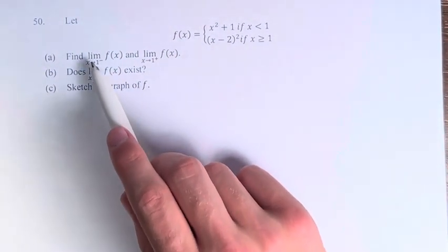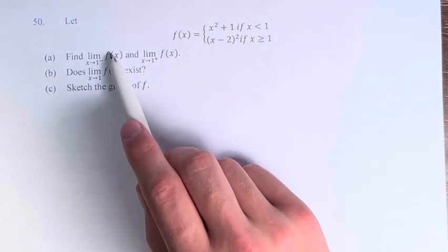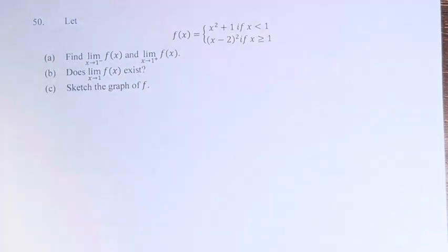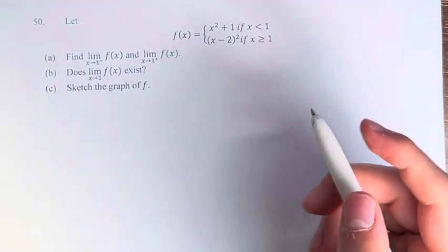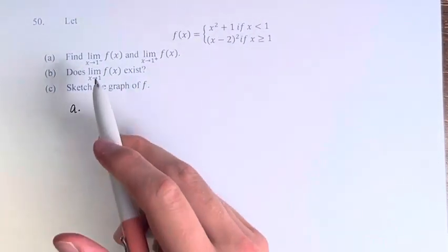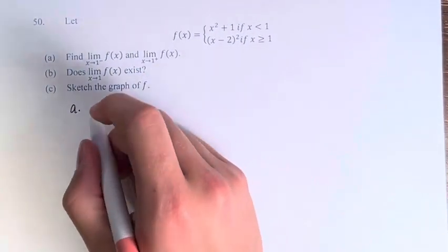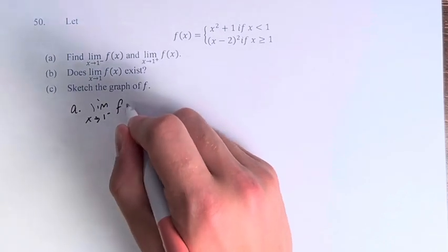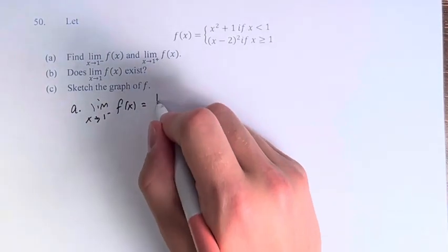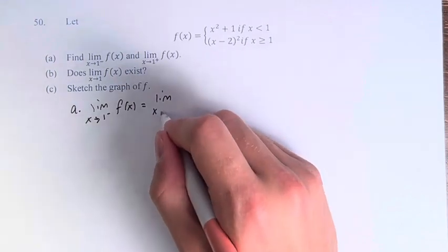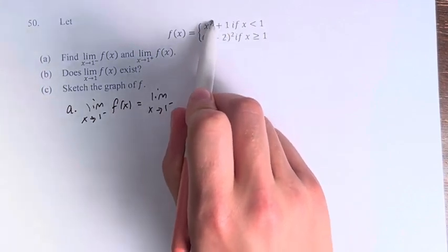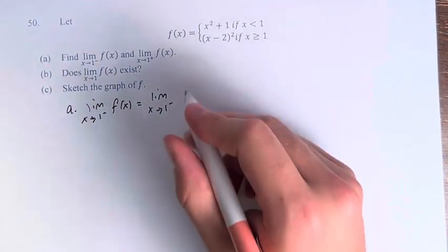For part a we have to find the limit as x approaches 1 from the left of f of x, and the limit as x approaches 1 from the right of f of x. If we're approaching 1 from the left, that means we have values of x that are less than 1. Therefore, we're using this top definition of this piecewise function.